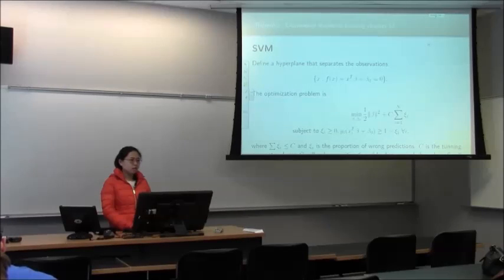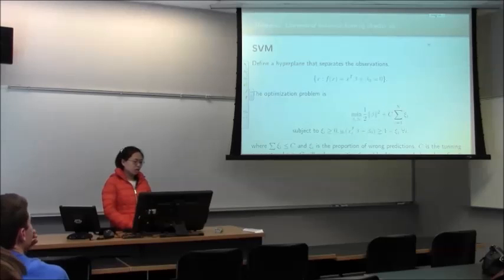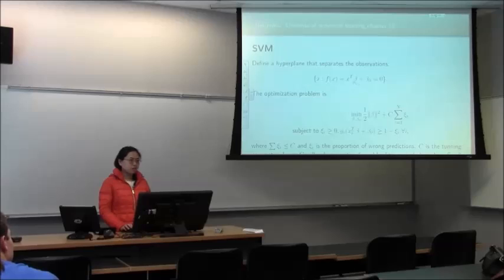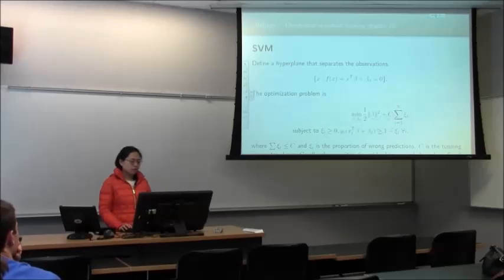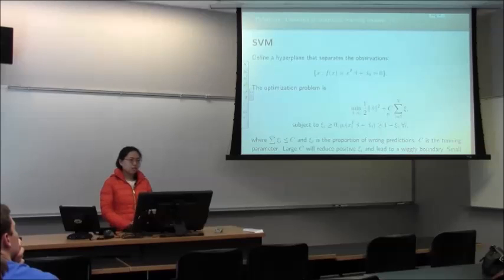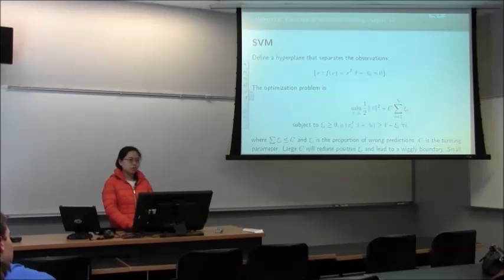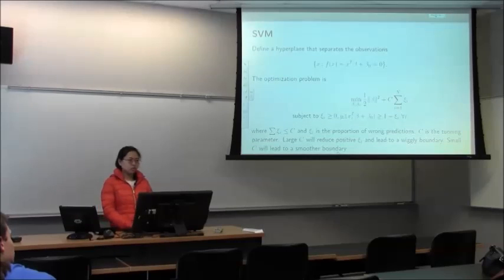Support vector machine is a method for classification. It builds a hyperplane that separates the points into different classes. This hyperplane function is linear, and the optimization problem is to minimize the misclassification proportion. C is a tuning parameter with constraints for this optimization problem. A large C will reduce misclassification proportions, while a small C will lead to a smoother boundary.